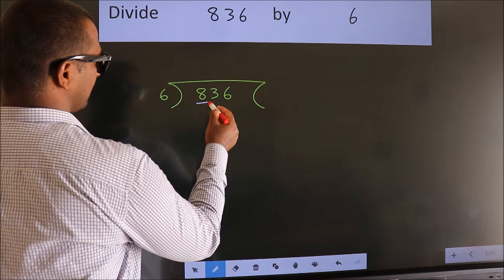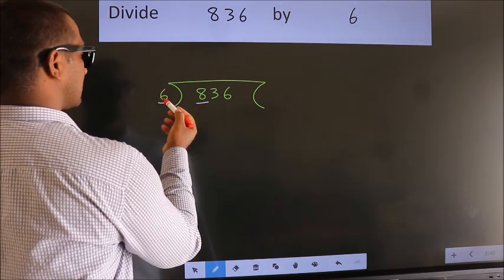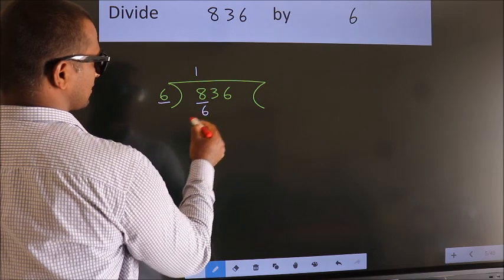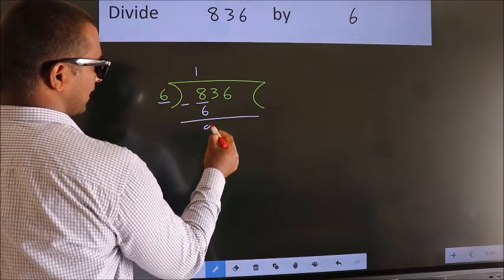Here we have 8, here 6. A number close to 8 in the 6 table is 6 once 6. Now we subtract. We get 2.